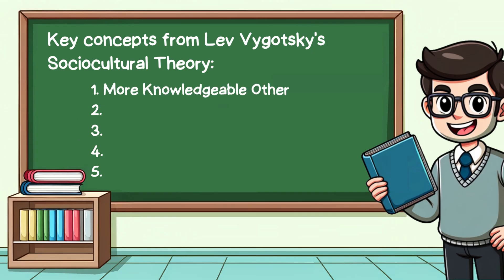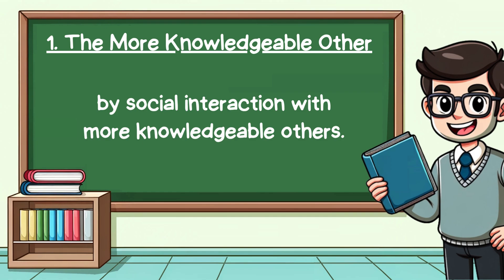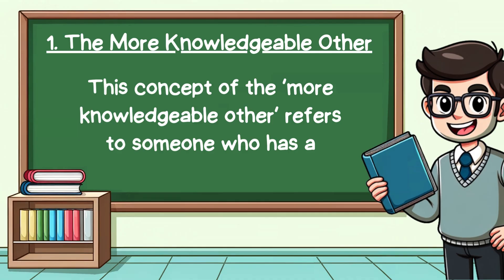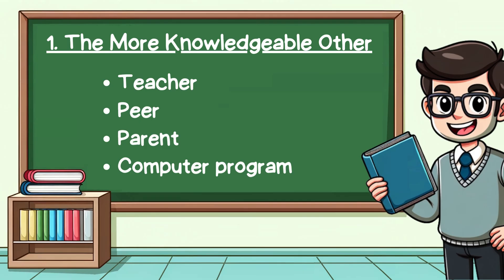Let's start with the more knowledgeable other. Vygotsky believed that the cognitive development of children is strongly influenced by social interaction with more knowledgeable others. This concept refers to someone who has a better understanding or a higher ability level than the learner with respect to a particular task or concept. The more knowledgeable other can be a teacher, peer, parent, or even a computer program providing guidance and support to facilitate learning.